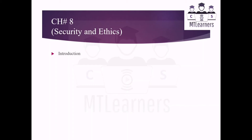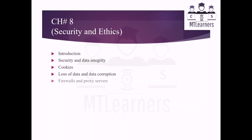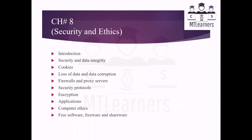Chapter 8 is Security and Ethics. An introduction of security and data integrity will be given. Cookies will be defined, loss of data and data corruption methods will be discussed, and then firewalls and proxy servers will be explained. Security protocols, encryption, types of encryption, and applications in the real world will be covered. Computer ethics and in the last, different types of software — free software, freeware, and shareware — will be discussed. That covers all chapters from Chapter 1 to Chapter 8 in Section 1.